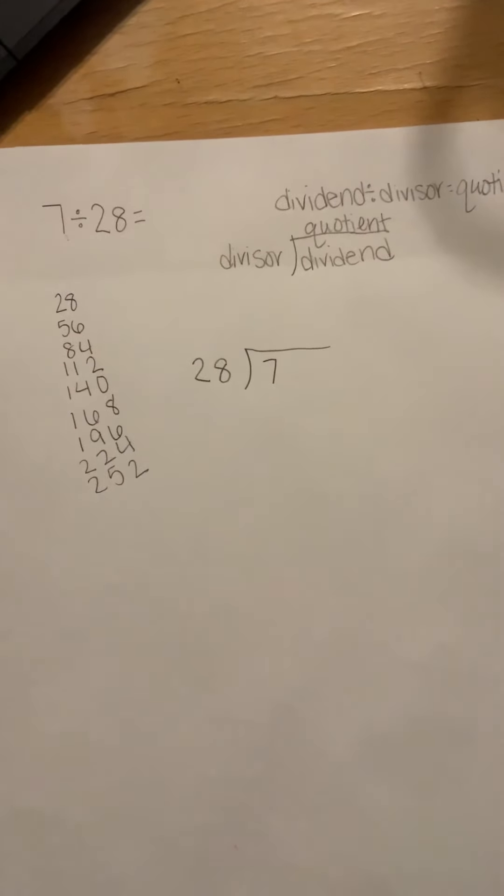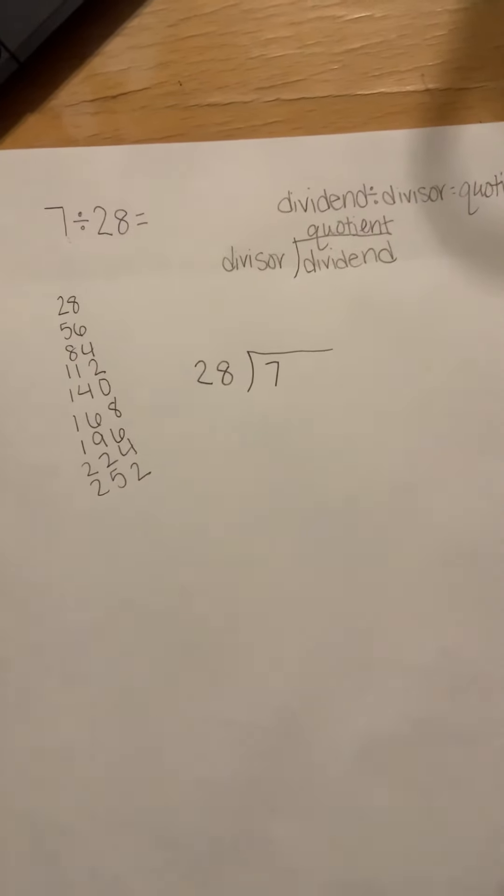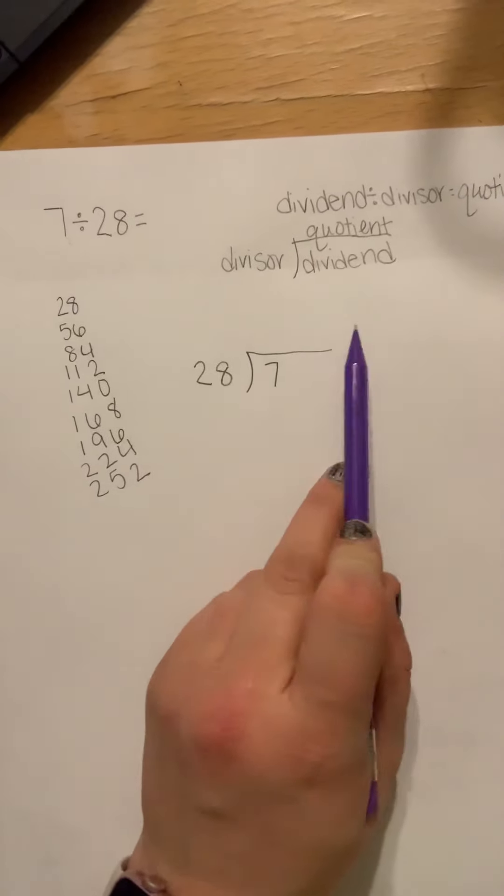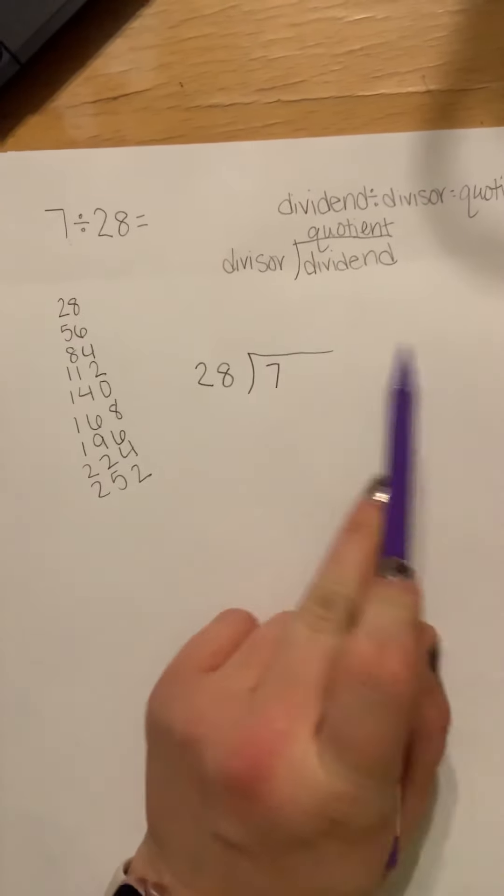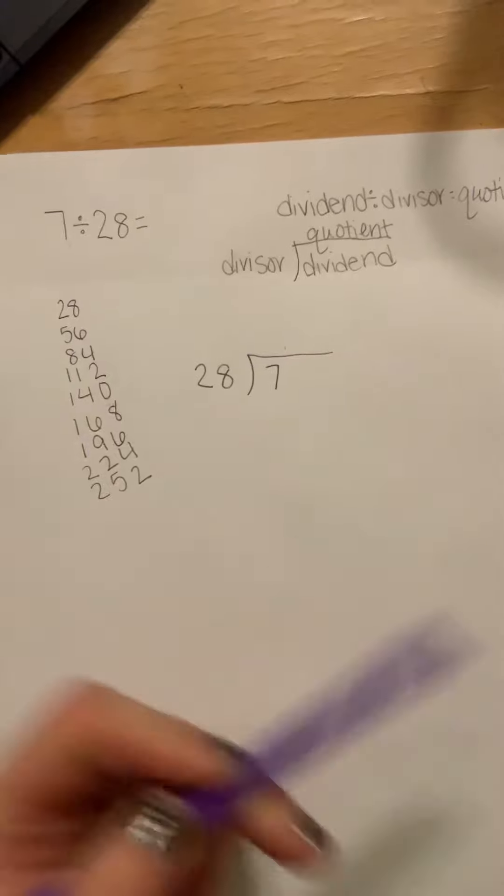All right and we only have to skip count nine times. So because our largest single digit in the quotient bar would be nine, we can't go any higher.